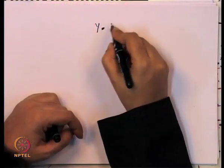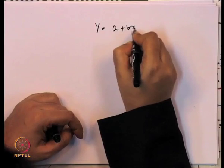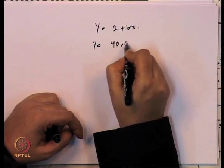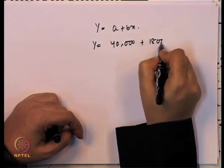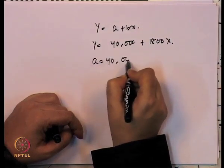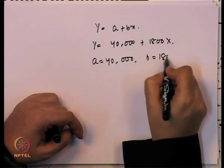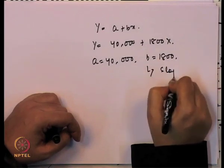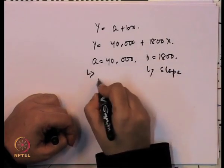First we will start the rudimentary method. Suppose we take y = a + bx as the functional form, and suppose we take the value: y = 40,000 + 1800x. Here we can say a is 40,000 and b is 1800, where b is the slope and a is the intercept.